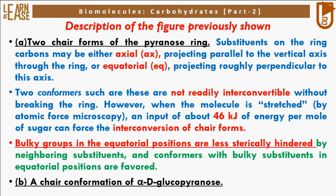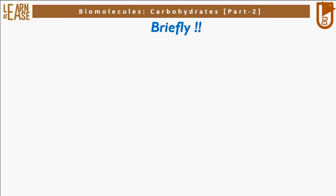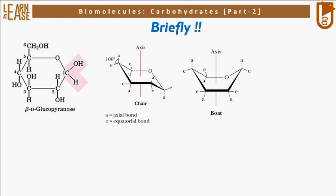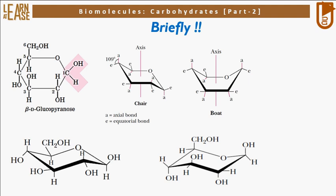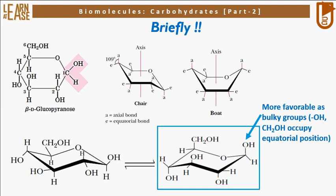Figure B shows a chair conformation of alpha-D-glucopyranose. The image shows that bulky groups like O and CH₂OH are more favored to occupy the equatorial position, whereas non-bulky protons can occupy the axial position with minimal torsional strain. The second image shows the chair conformer of glucose where bulky groups O and CH₂OH have occupied the equatorial position, while non-bulky protons occupy the axial position. Also, the same molecule glucopyranose can be present in two different chair conformers, but these conformers are non-interconvertible without breaking the ring structure.